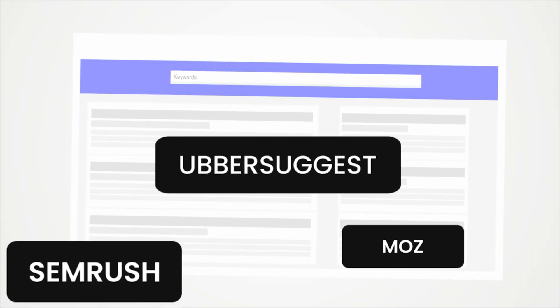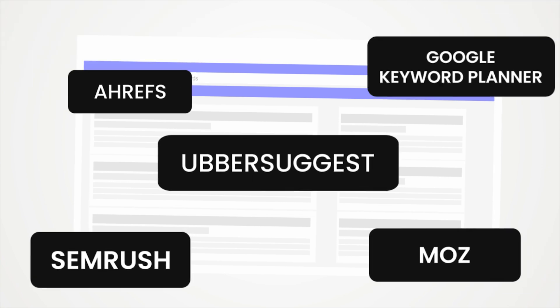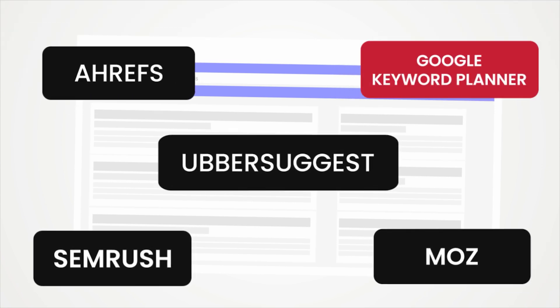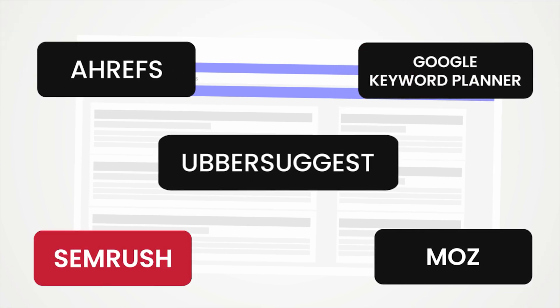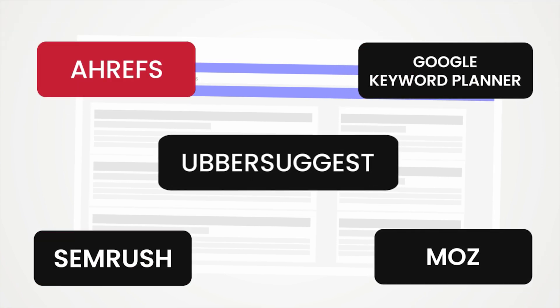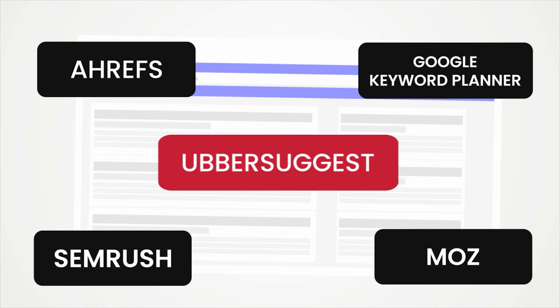You can use several keyword research tools available, such as Google Keyword Planner, SEMrush, Ahrefs, Ubersuggest, or Moz.